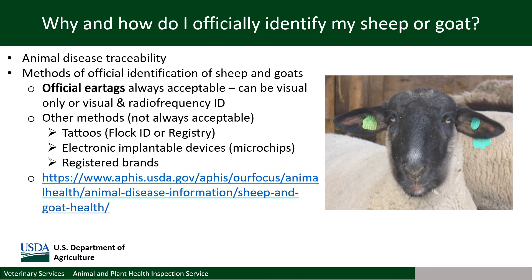New producers who have never had a flock ID assigned and ordered official ID are currently eligible for up to 100 free plastic ear tags. Other methods of official ID in sheep and goats include tattoos and microchips, but there are exceptions to the acceptability of these methods and you will need to ensure they are acceptable by checking with your state office responsible for sheep and goat official ID. Be aware that many states may have specific exemptions or requirements in addition to the federal regulations about official sheep and goat ID.